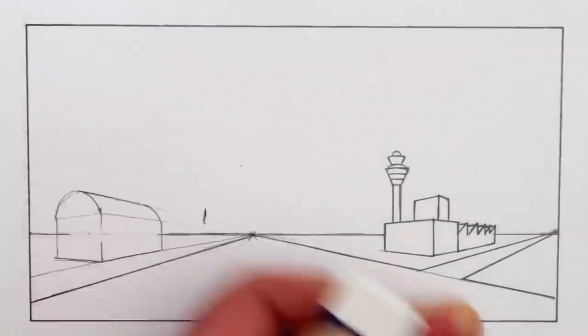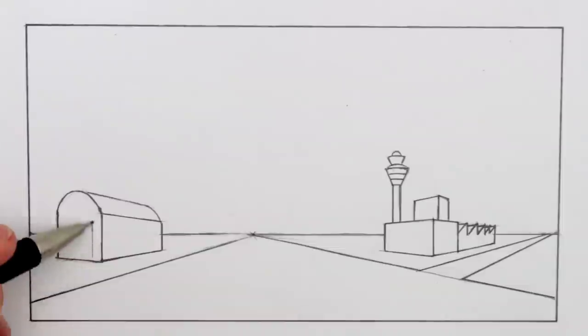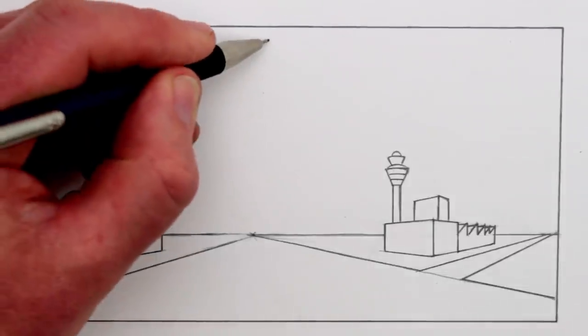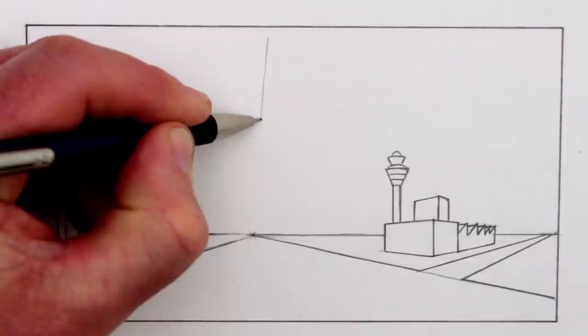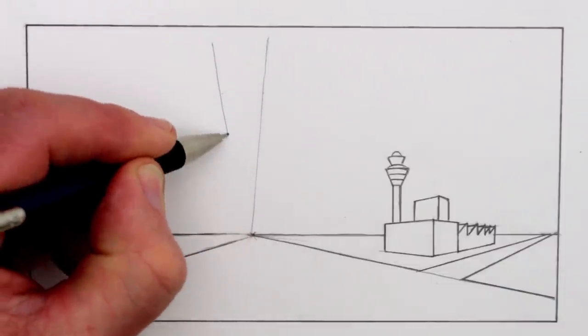I think I'll draw some large hangar doors on the left-hand side of this building. Now it's time to draw the plane itself. Start by drawing two diagonal lines close together. They go straight up from the main vanishing point.